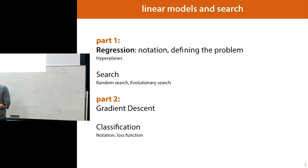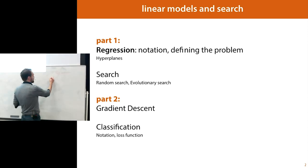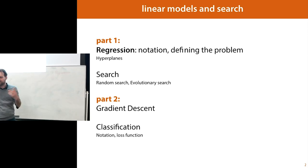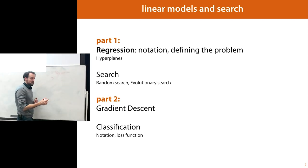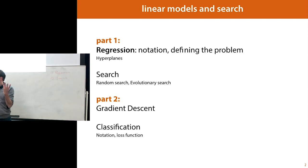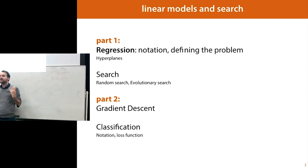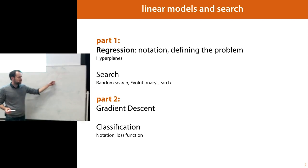I'll explain most of it in the context of regression. We'll start by explaining how we define a model — a linear model in a regression setting — what the notation is, and slowly walk through the mathematics. Then, given that definition, we will discuss how to search that particular space of models. This is really the most important part of the lecture, in the sense that the search method called gradient descent is basically the backbone of almost all the machine learning we'll be doing in the whole course. So pay attention.